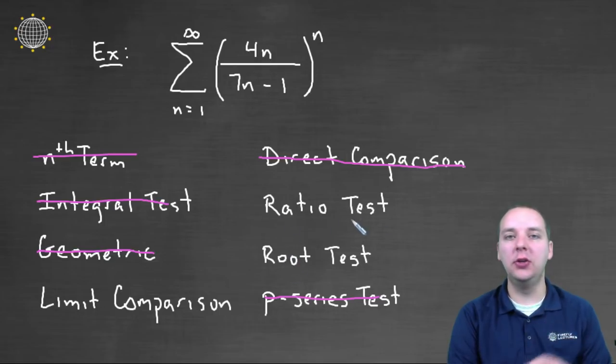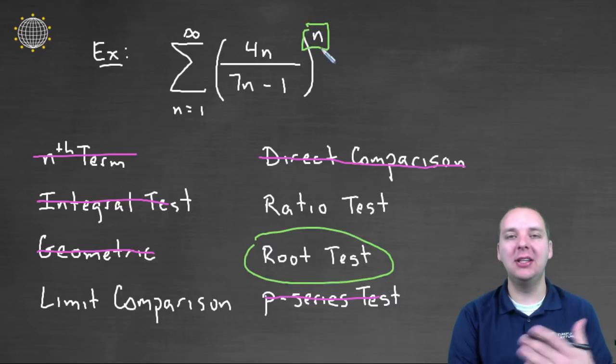A ratio test is always a good universal test you could try to make work. The root test seems to me like the most practical choice here. Whenever you see nth powers it's usually a dead giveaway that it's best done with the root test. You might could maybe try to find somebody to compare him to and do a limit comparison test, but I think I'm going with the root test. I just think that makes the most sense here.